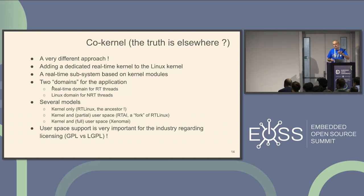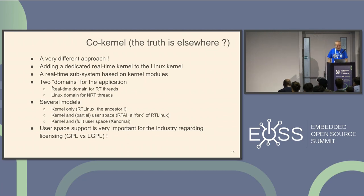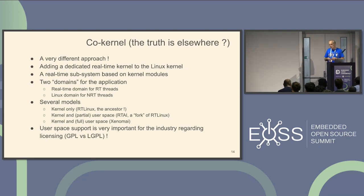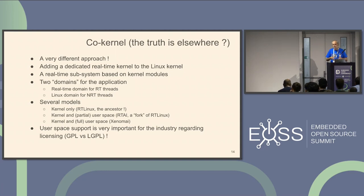The domain naming comes from the Xenomai environment, but it's exactly the same for RT Linux or RTAI. There were several models: RT Linux, designed by FSM Labs; RTAI with partial user space integration, which was a fork of RT Linux; and Xenomai, where you can develop user space applications. User space support is very important because for the industry, if you develop in the kernel, you must give the source code to users — so using user space with LGPL is much better for the industry.